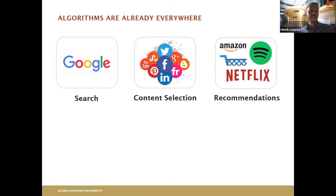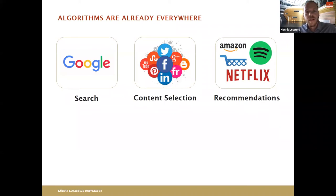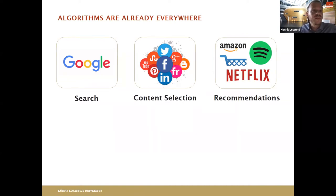Netflix, Amazon, Spotify — all these platforms give recommendations. If you buy something on Amazon you've seen it: 'customers who bought this also liked...' If you watch Netflix it shows what you might like next; Spotify knows how to extend your playlist. Behind all of this are recommendation algorithms. What we see is really influenced by these pre-selections, because some content and some products are never presented to us, even though we might be interested.